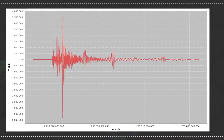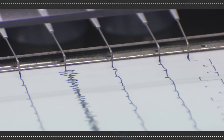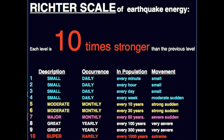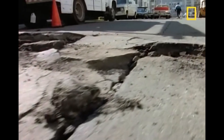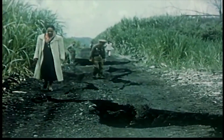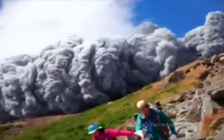The Richter scale is commonly used to measure the magnitude, or size, of an earthquake. The Richter scale is a logarithmic scale, meaning that a small increase in the magnitude of an earthquake corresponds to a huge increase in the energy released. For example, a magnitude 6 earthquake is 10 times more powerful than a magnitude 5 earthquake, and a magnitude 7 earthquake is 100 times more powerful than a magnitude 5 earthquake.